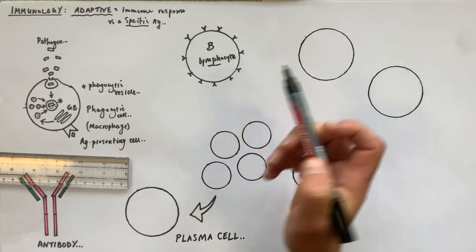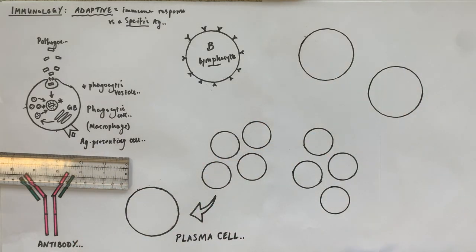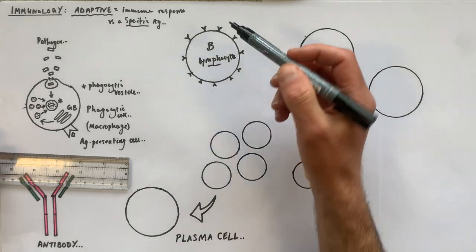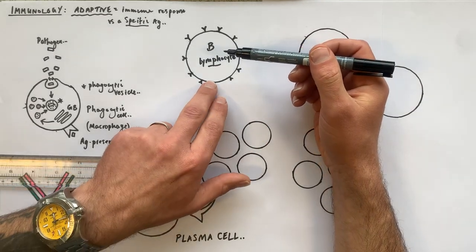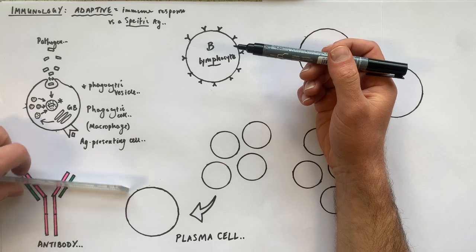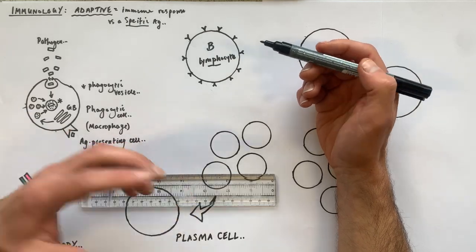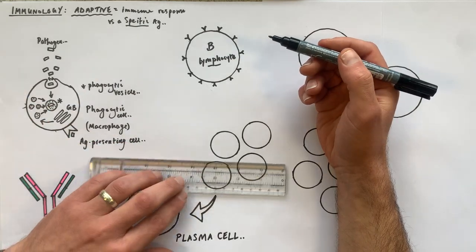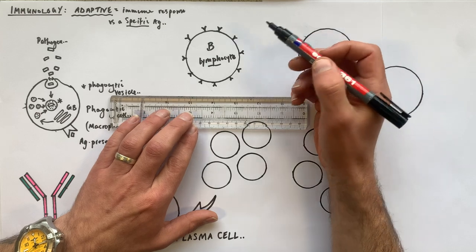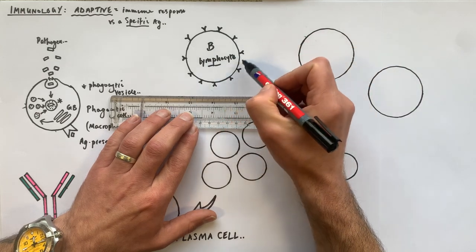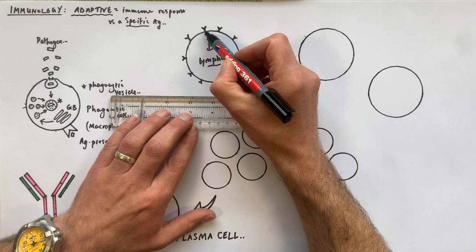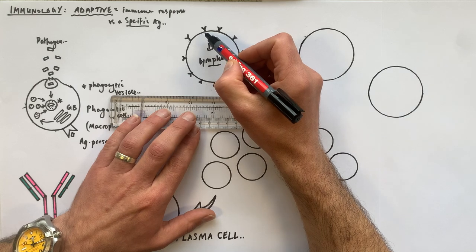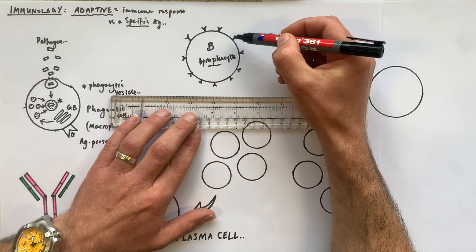At the same time, there is a cell type called a B lymphocyte. A lymphocyte is a specialized type of leukocyte — the general name for a white blood cell. B lymphocytes have membrane-bound antibodies on their cell membrane that project outwards.